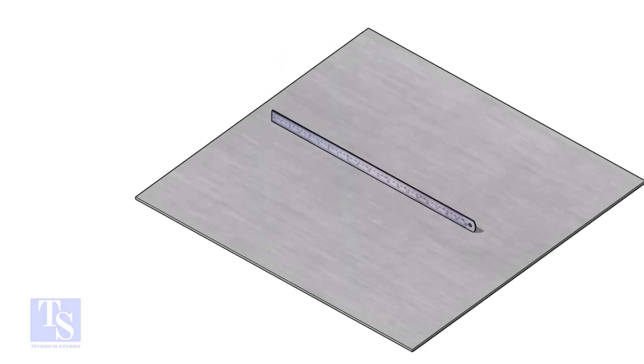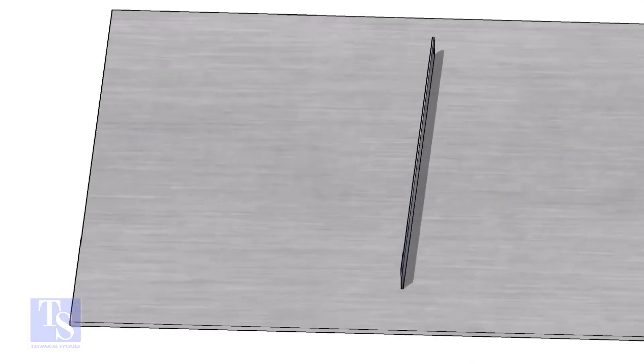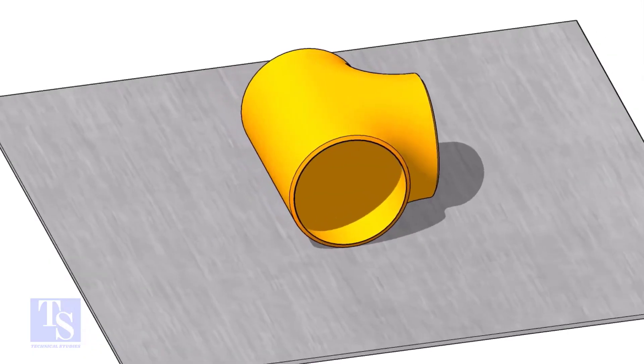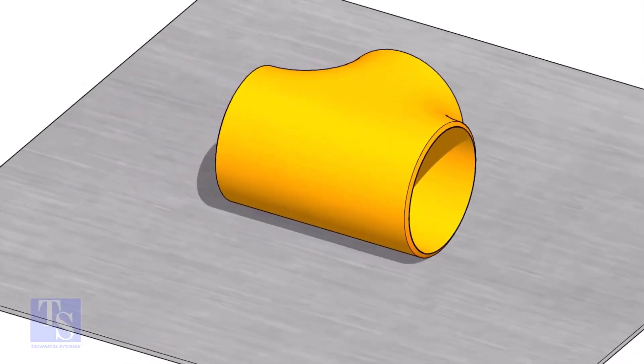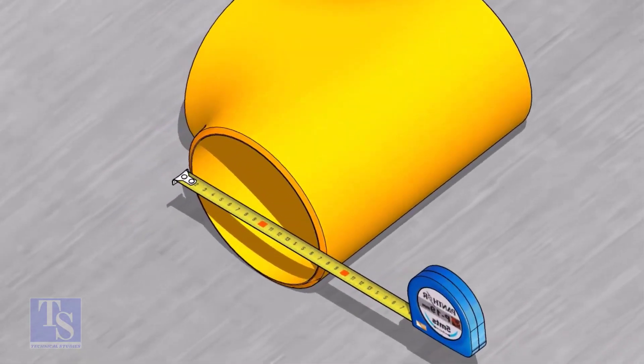Choose a straight plate and put the tee on it. Check the outer diameter of the tee. In this case, the diameter is 168 millimeters.